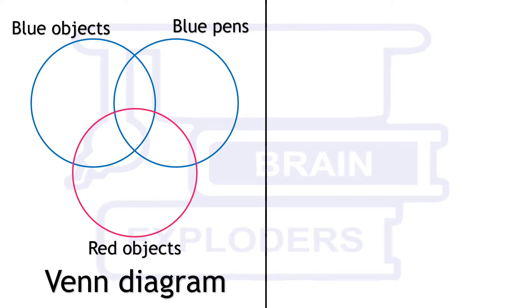This is the Venn diagram. We know that an object cannot be completely blue and completely red simultaneously. Even then, there is an intersection of blue and red here.